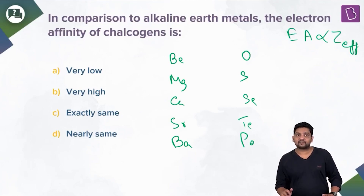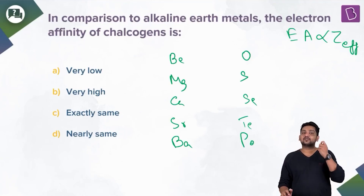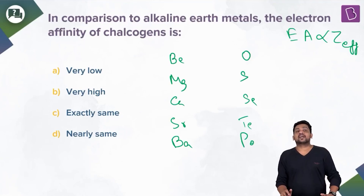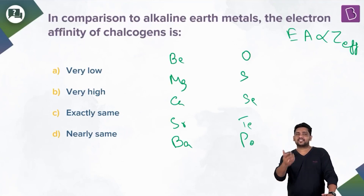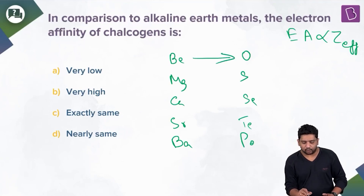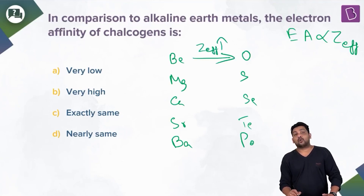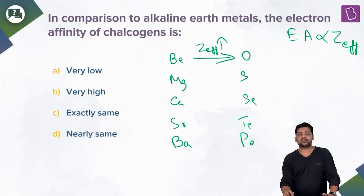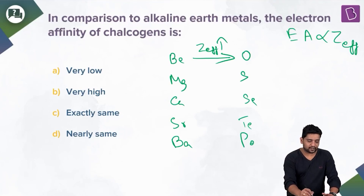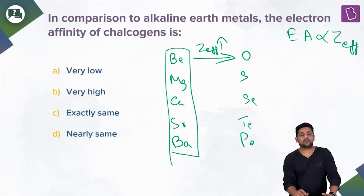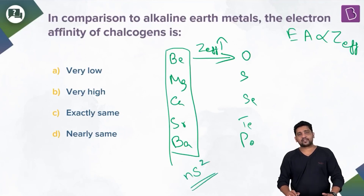Electron affinity is the energy released when an electron is added to an isolated gaseous atom in its ground state. This energy is proportional to Z_effective, and Z_effective increases from left to right, so chalcogens will have higher electron affinity.